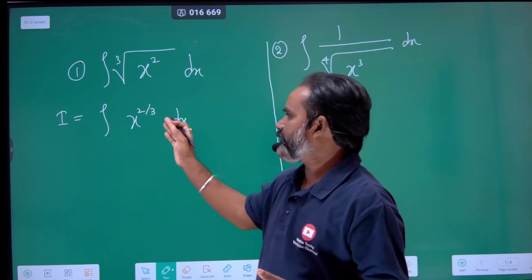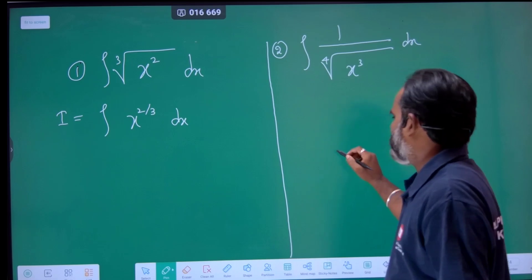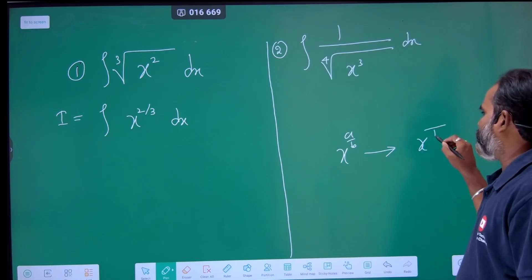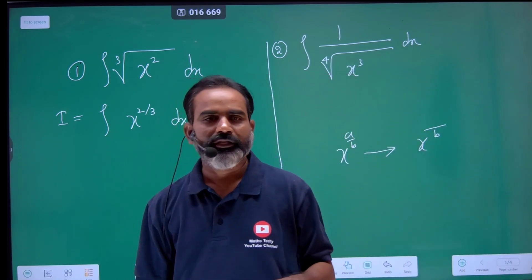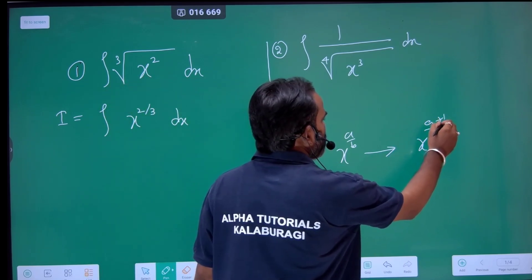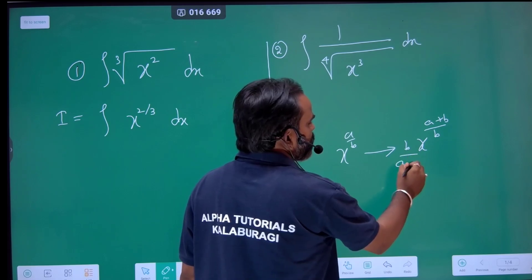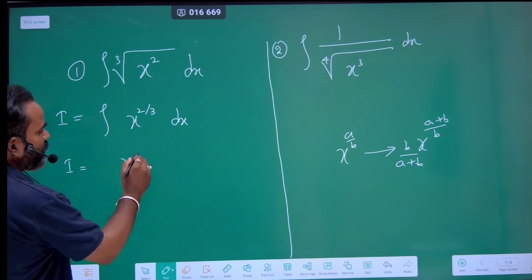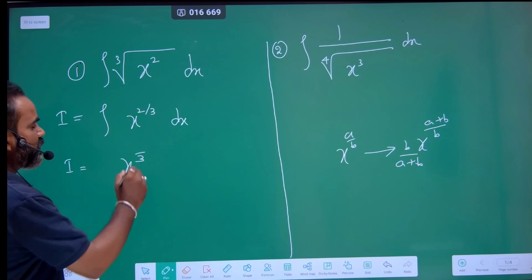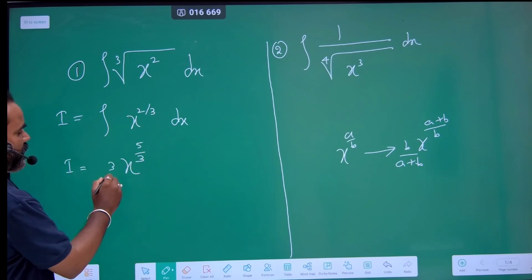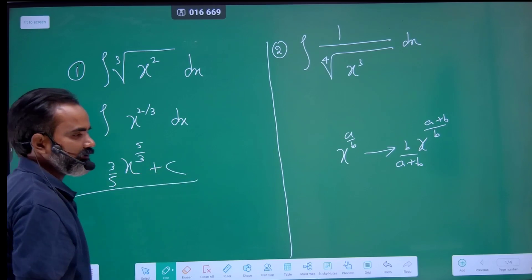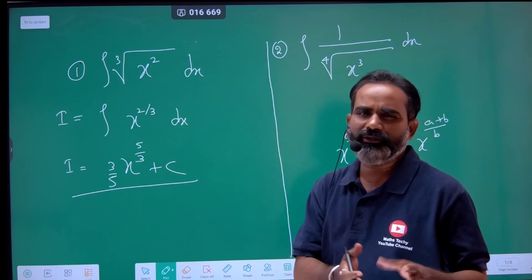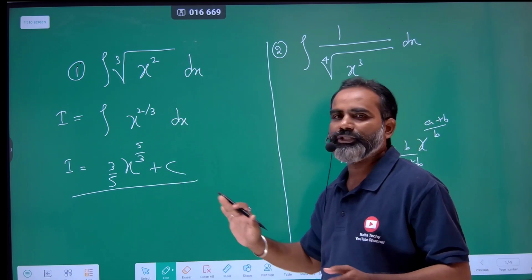Generally, 2 by 3 — adding 1 gives you the new exponent. You write the denominator as it is, then add 2 plus 3 to get 5, and write it in reciprocal form. This is the direct step. Like this, you can solve the problem — it's a simple way.